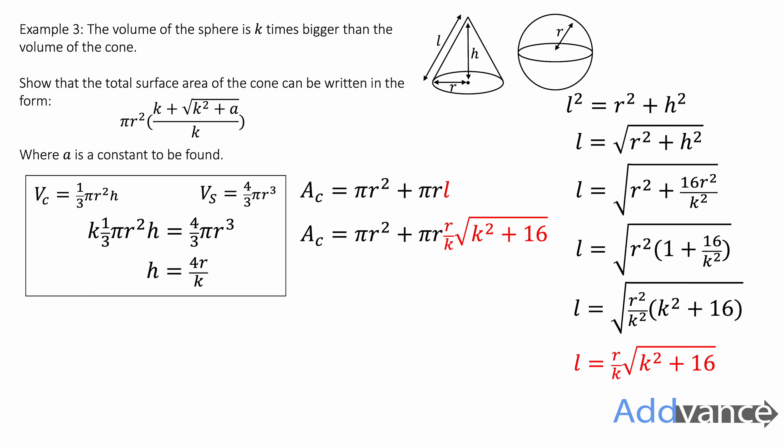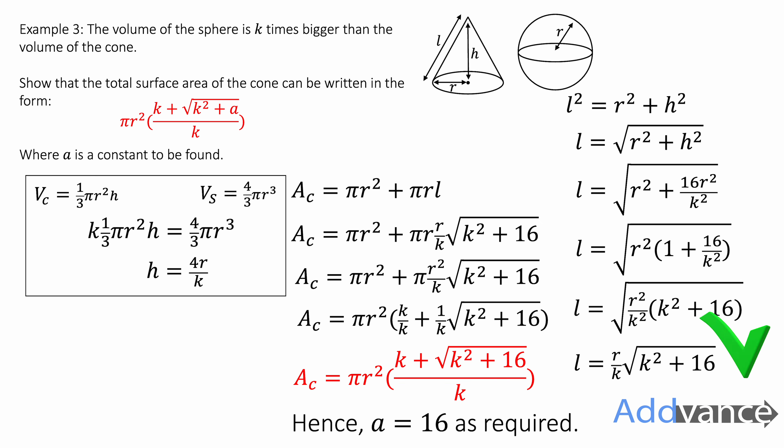We substitute that in. So we replace the l with this expression we found. We simplify that: r times r is r squared. And we factorize out a pi r squared out of both of these. See how there's a pi r squared in both of those expressions there. It's looking good. We're almost there. Now we make a common denominator. So the k over k and the 1 over k can be added together. It was 1 plus 1 over k before. Now it's k over k plus 1 over k. And we can write that as the expression we wanted in the original expression. And so therefore, if we compare these two expressions, a is 16. And we have indeed answered the question as required.